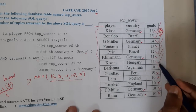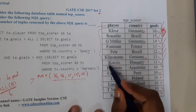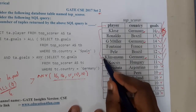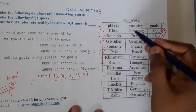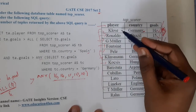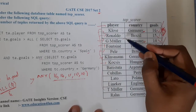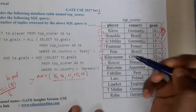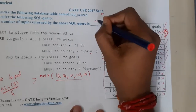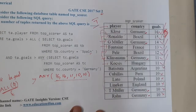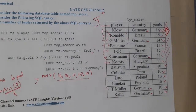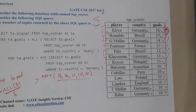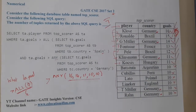So counting the tuples: one, two, three, four, five, six, seven names. Are there any repetitions? No, there are no repetitions, so the result will be seven. Even if there were repetitions we don't eliminate duplicates here, so the result remains seven.